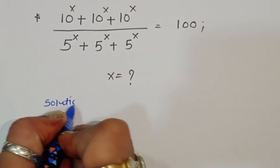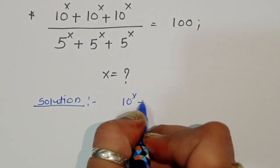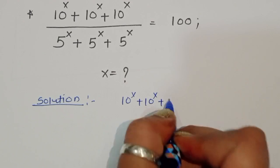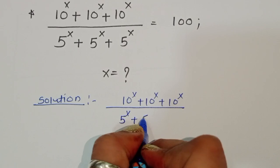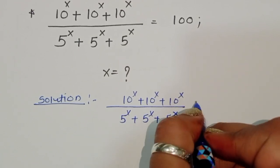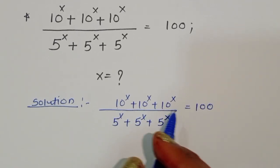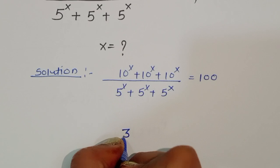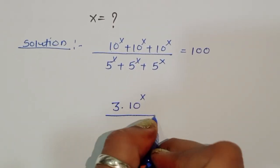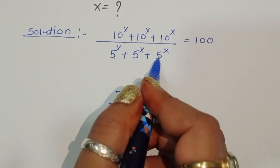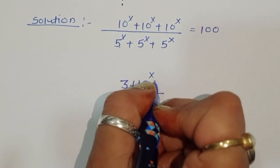Let's see the solution. We have 10 power x plus 10 power x plus 10 power x divided by 5 power x plus 5 power x plus 5 power x equal to 100. We can write the numerator as 3 times 10 power x, and the denominator as 3 times 5 power x.